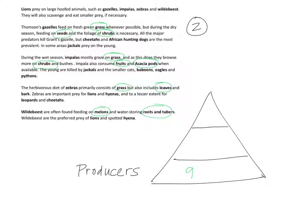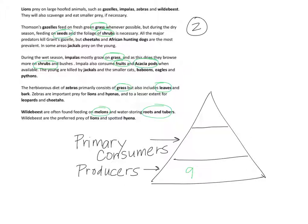The second level are the consumers. Since they eat the producers first, they are called the primary consumers — that's level two. The primary consumers are the ones that eat the producers, so in this group that's the gazelles, the impalas, the zebras, and the wildebeest. There are only four primary consumers in this particular food web.